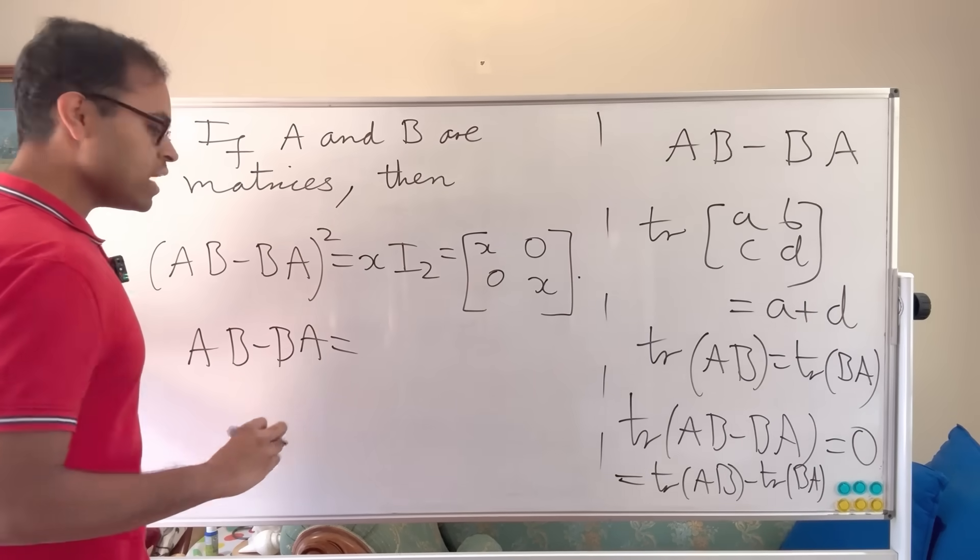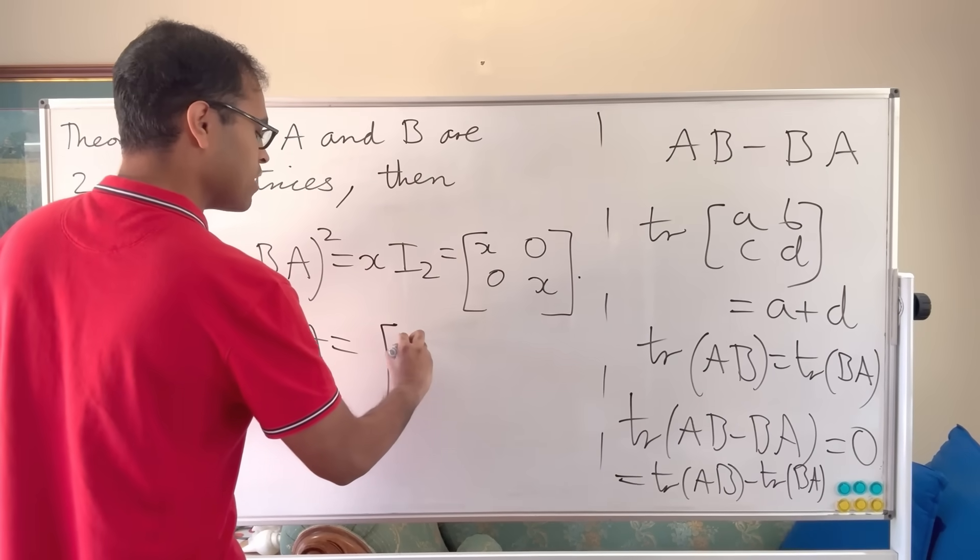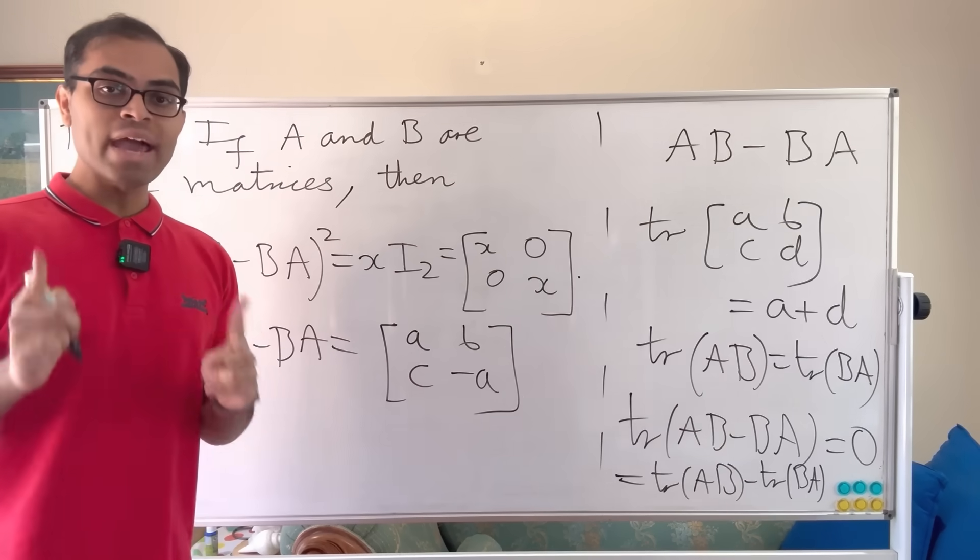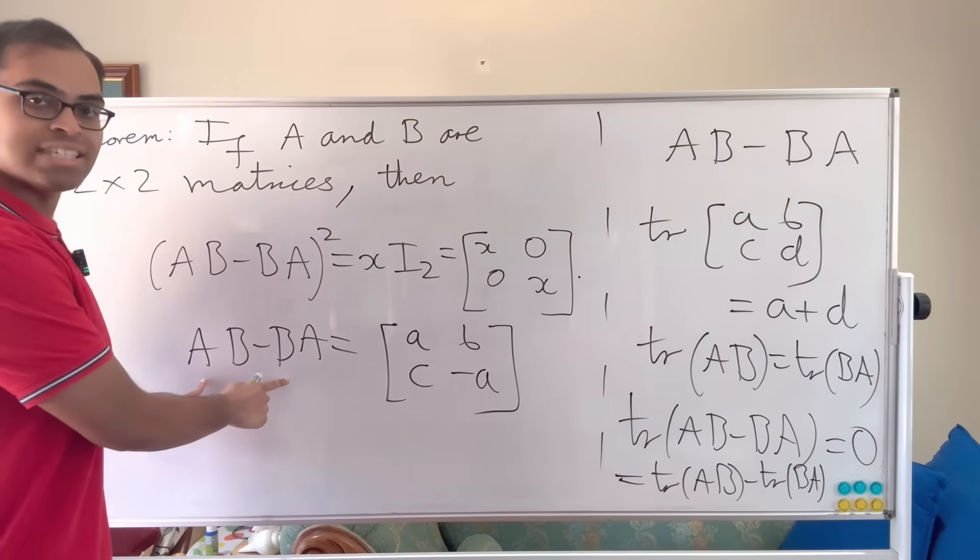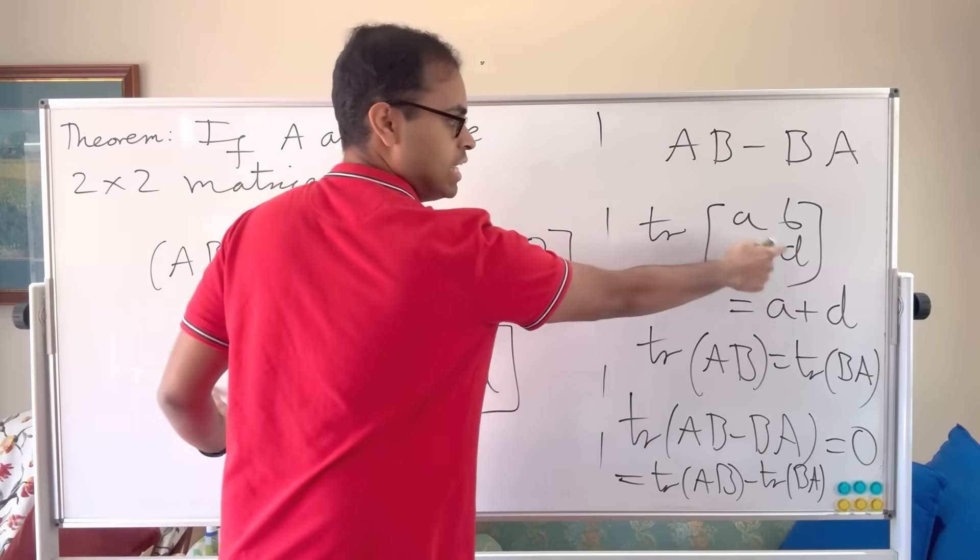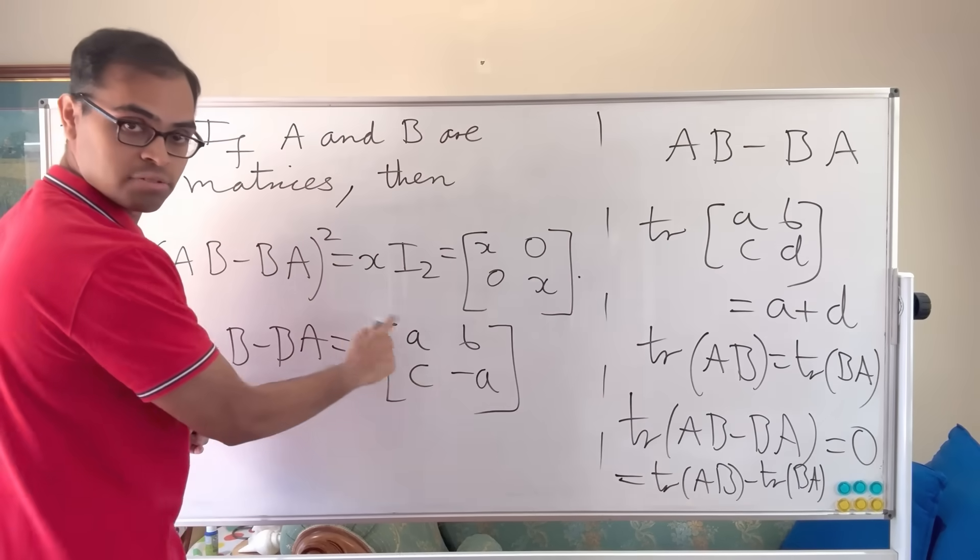And what is that special way? We can write it as follows: we can write it as a, b, c, minus a for some a, b, and c. Why can we do this? Because we know the trace is 0. So the sum of the diagonal entries is 0. So if you think about d, a and d, that means d is minus a. So we have this form.